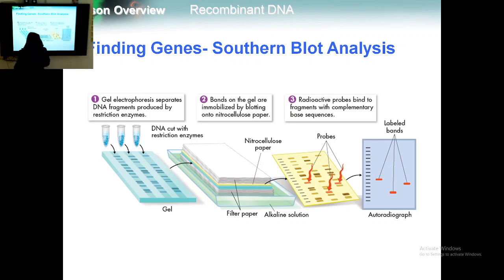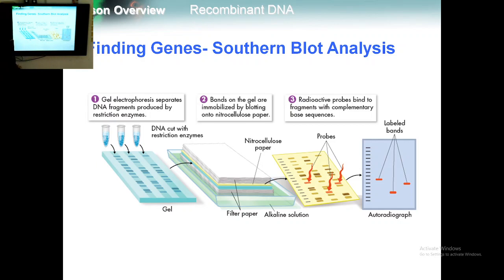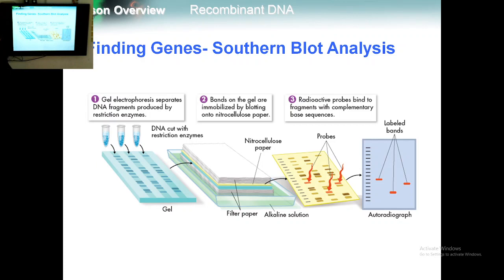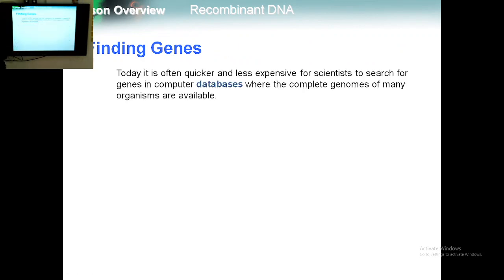Gel electrophoresis separates DNA fragments produced by restriction enzymes. The bands on the gel are immobilized by blotting onto nitrocellulose paper. Then probes are applied and made autoradiographic until specific probes illuminate. Today it is quicker for scientists to search libraries or databases to find a specific gene for a specific protein or sequence, which is easier than using Southern blotting.